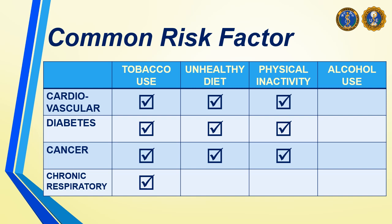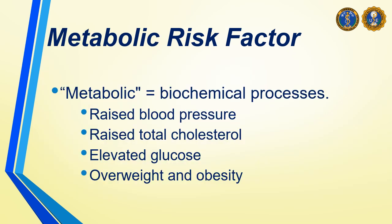Next is alcohol use. Unfortunately, prolonged alcohol use can also develop heart diseases, and can also damage your pancreas, thus causing low insulin production — leading to diabetes. Cancer? Possible — particularly liver cancer. Chronic respiratory diseases? Unlikely.